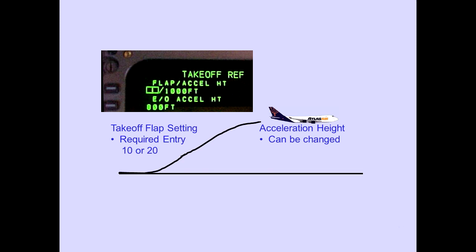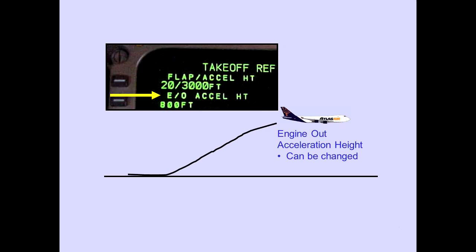A takeoff flap setting of 10 or 20 is a required entry during the pre-flight sequence. Acceleration height can be changed by the flight crew. Engine out acceleration height defaults to 800 feet above ground level; however, it can be changed by the flight crew if the data in the Runway Performance Manual (RPM) dictates. Remember, acceleration height altitudes refer to height above ground level, not sea level.